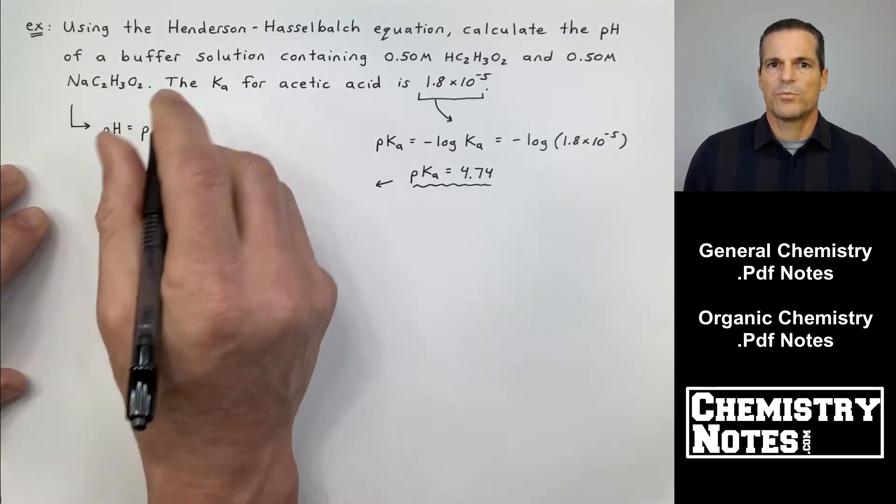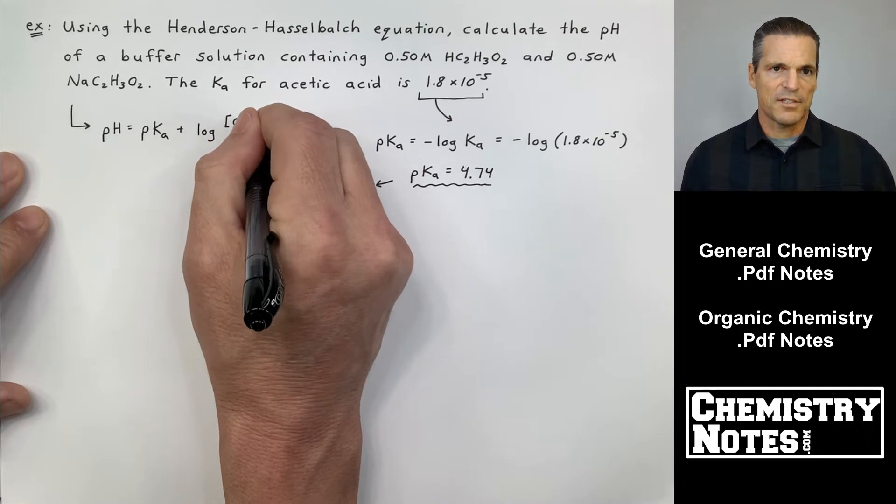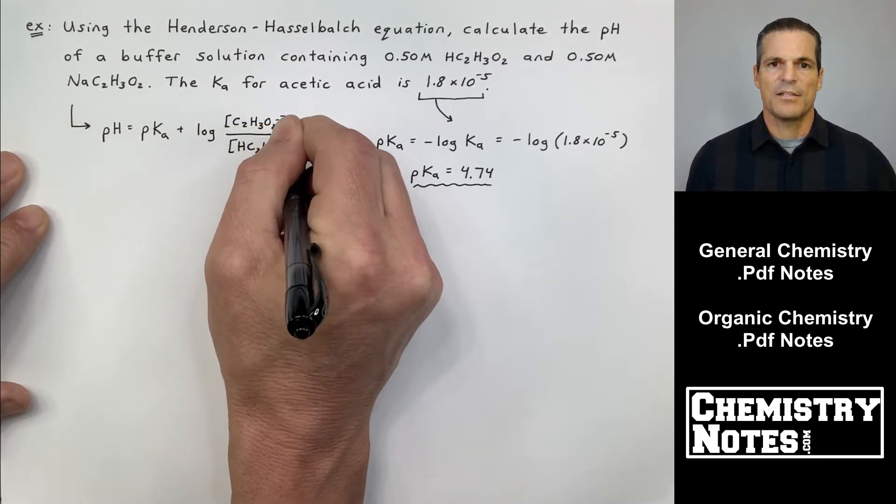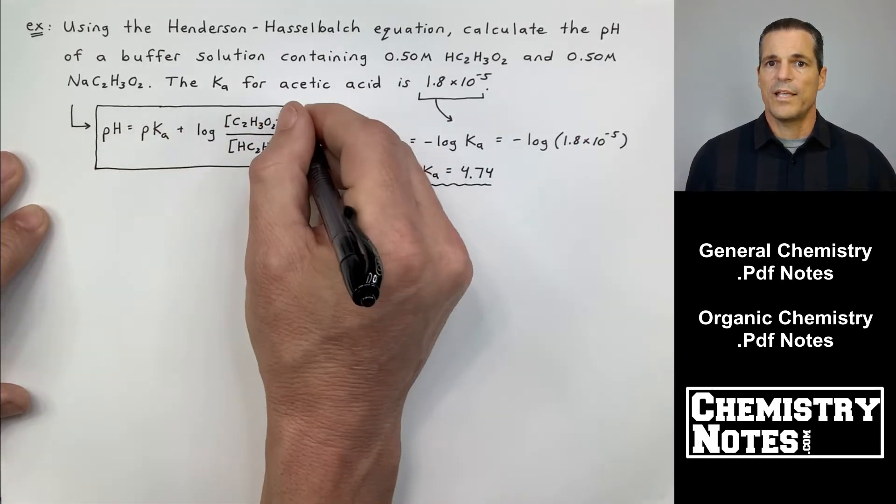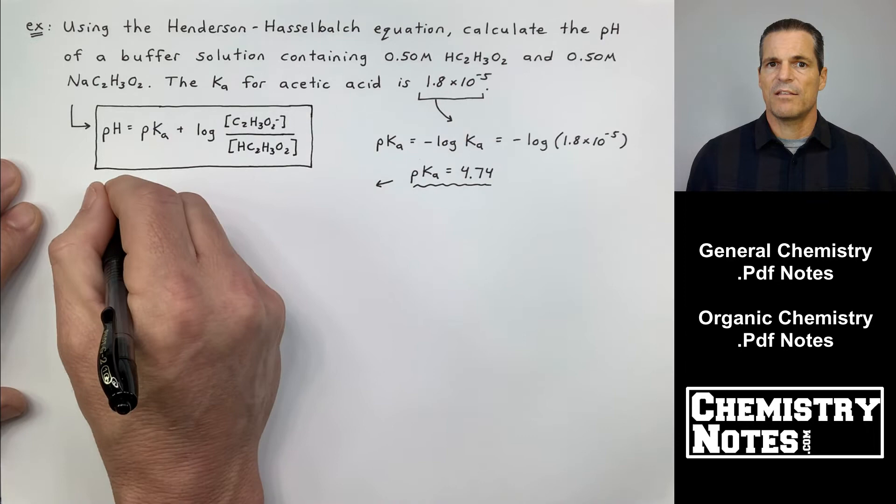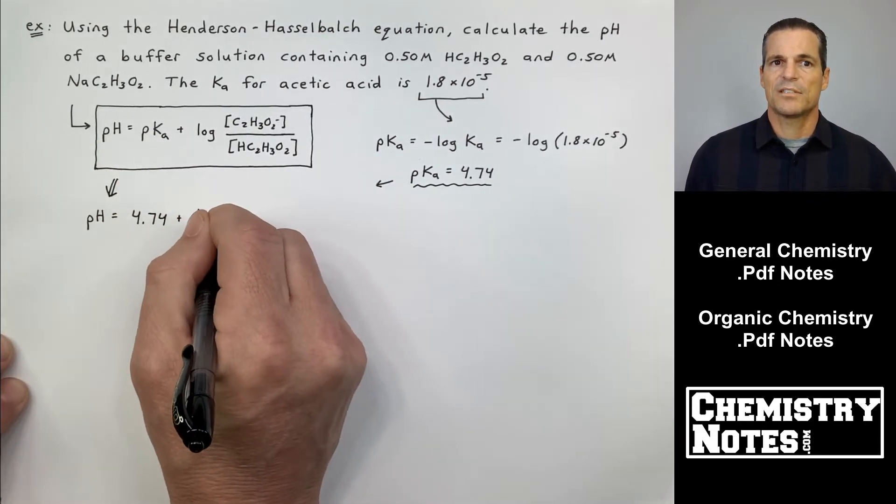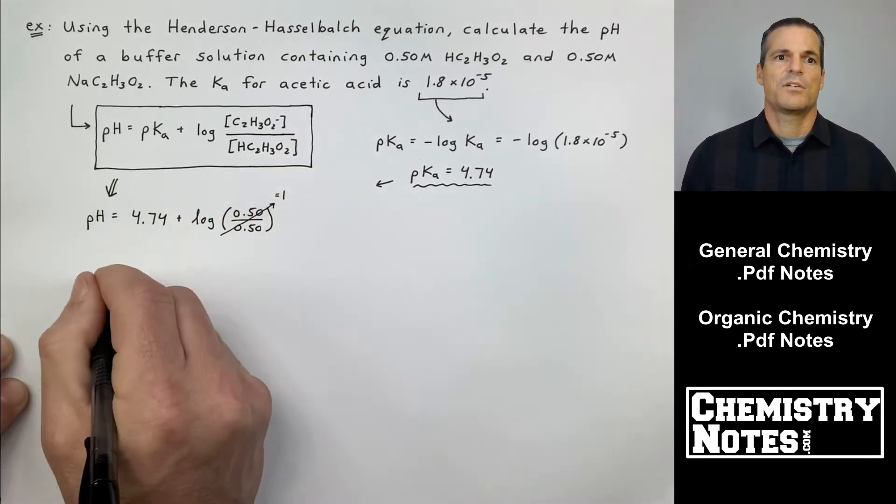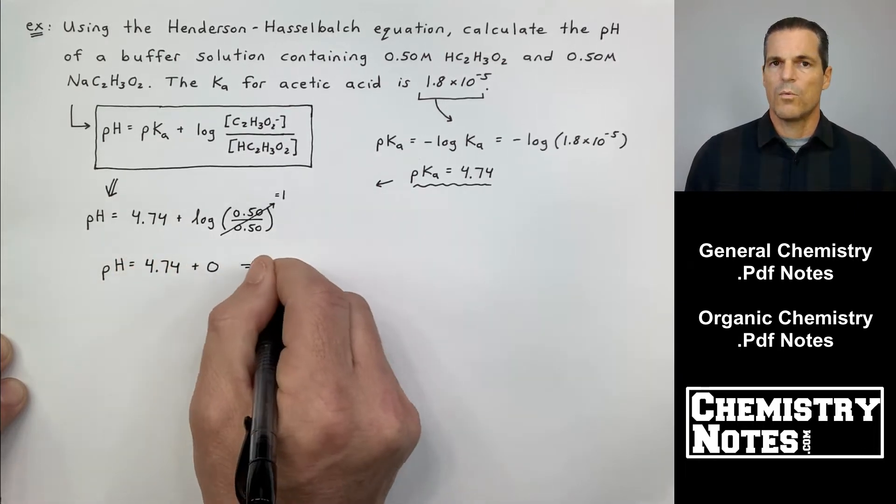It says here, the Ka for acetic acid is 1.8 times 10 to the minus 5th. So if you know you're going to use the Henderson Hasselbalch equation, you might as well just get the pKa right now. pKa is minus the log of Ka equals minus the log of 1.8 times 10 to the minus 5th. My pKa is 4.74.